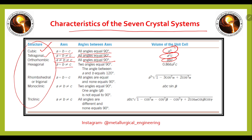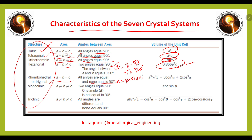Hexagonal: a = b ≠ c, two angles are equal to 90 degrees, specifically alpha = beta = 90 degrees and gamma = 120 degrees, and this is the volume. Rhombohedral or trigonal: a = b = c, all angles are equal and none equals 90 degrees — alpha = beta = gamma, all not equal to 90 degrees — and this is the volume of this unit cell.